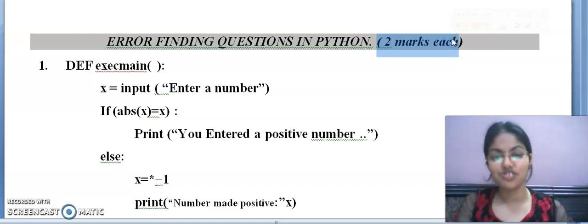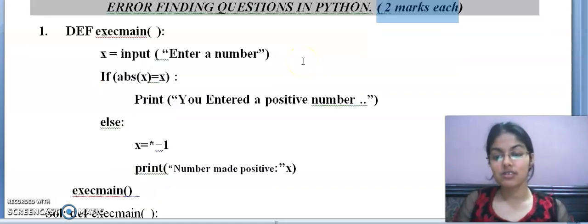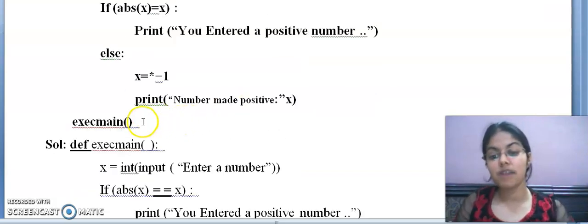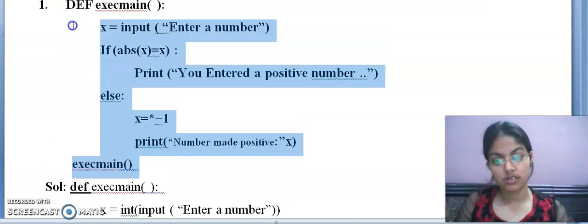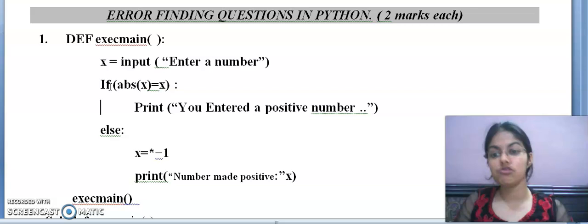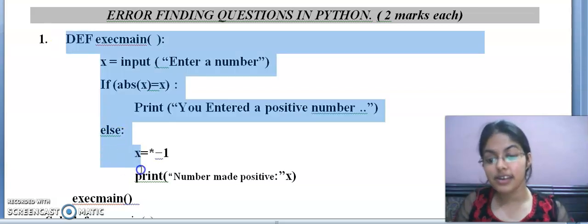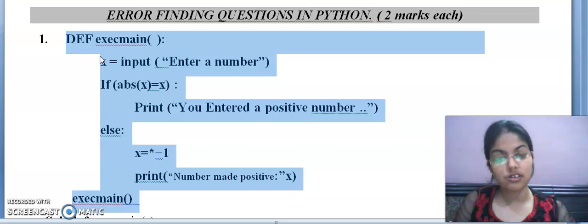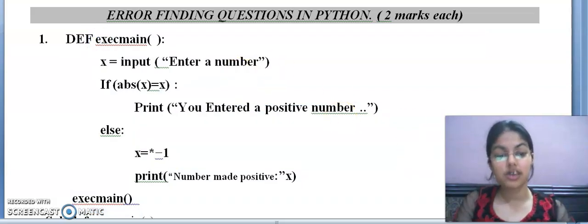In CBSE board exams, generally these types of questions are asked of two marks. And the most easiest questions to attempt, but they just give you the program and you have to find out the error and write the corrected version of the program after underline. What you have to do is write the corrected version of the code. Make sure whatever errors you correct, you underline them. Otherwise, you won't get marks.